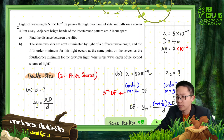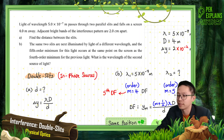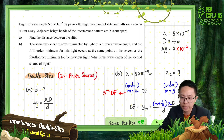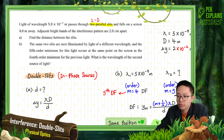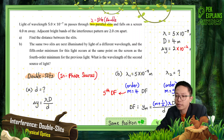Let us read the question together. Light of wavelength 5×10⁻⁷ meter passes through two parallel slits. First, identify: is it double slit, single slit, thin film, or diffraction grating? This one is two slits, which means double slit.